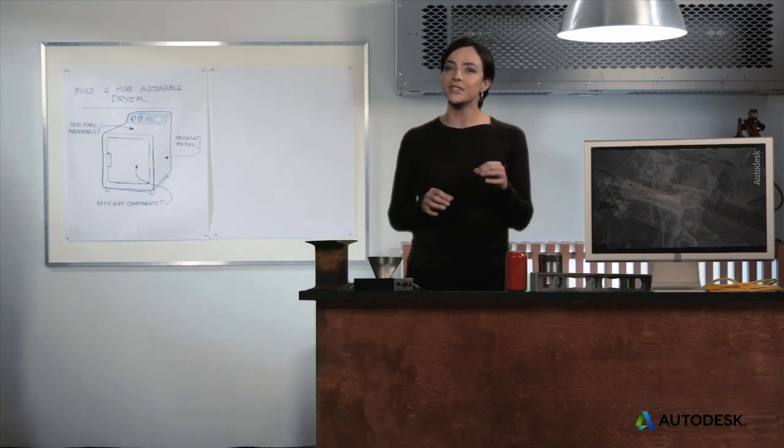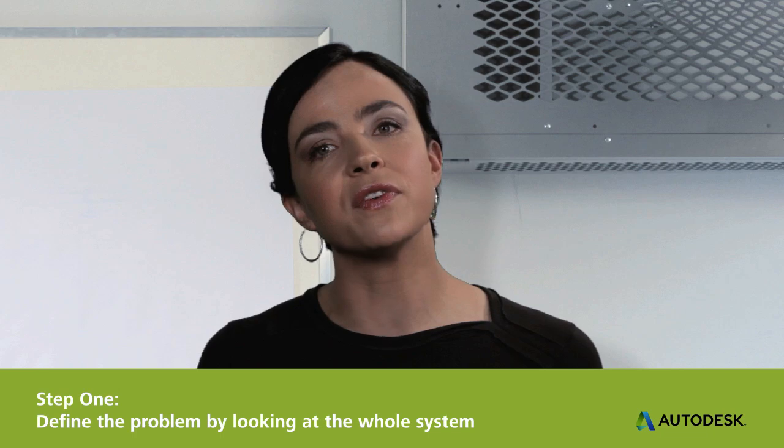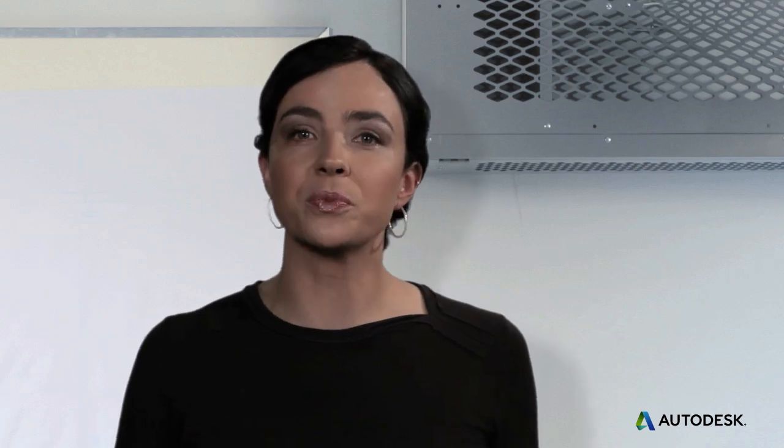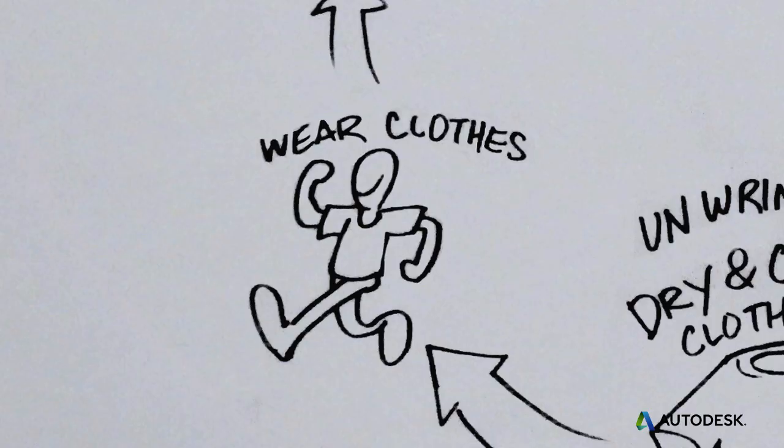Before you start jumping to conclusions and fixating on any final design solutions, the first step is to more deeply define the problem by looking at the whole system. So let's expand our thinking from the dryer to the larger process of clothes getting dirty, being washed, and being dried. It looks something like this.